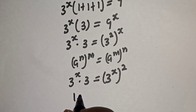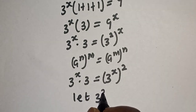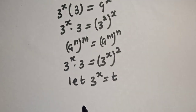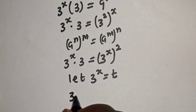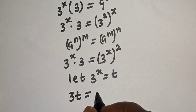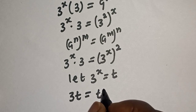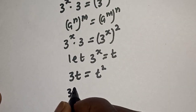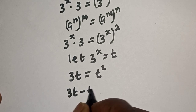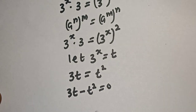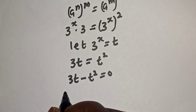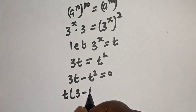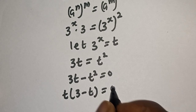Let 3 raised to power s equal t. Then we have 3t is equal to t squared. Now let's equate everything to zero. We have 3t minus t squared is equal to 0.